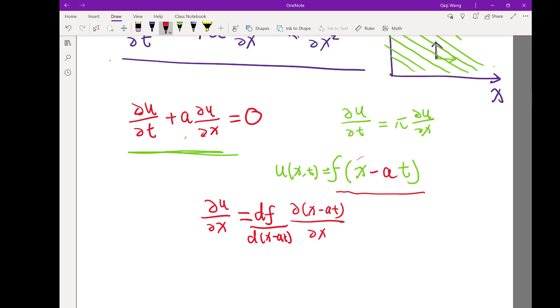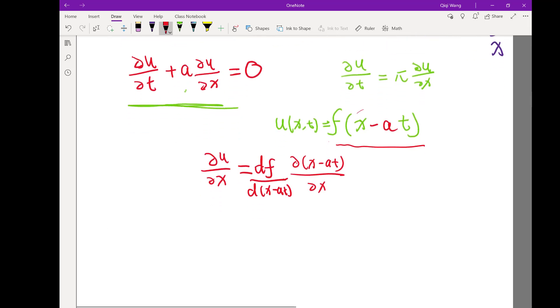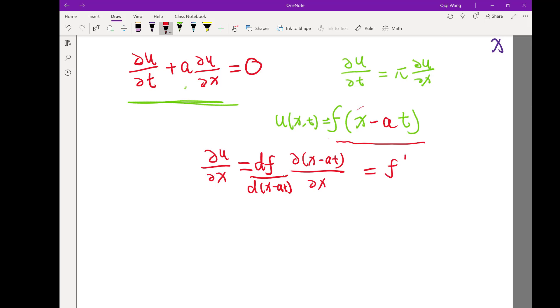One, right? Because here we are holding t as fixed, taking partial derivative, so we only have x to work with. ∂x/∂x is one. So it's actually equal to—I'm just going to write f'.